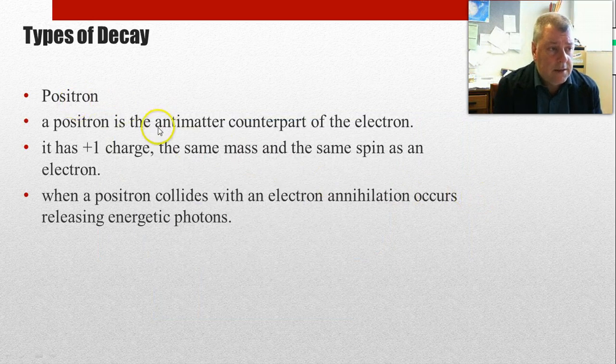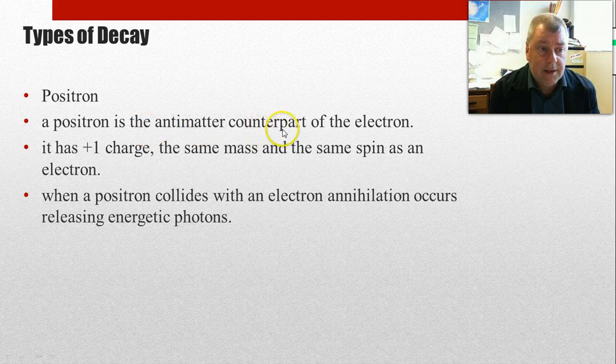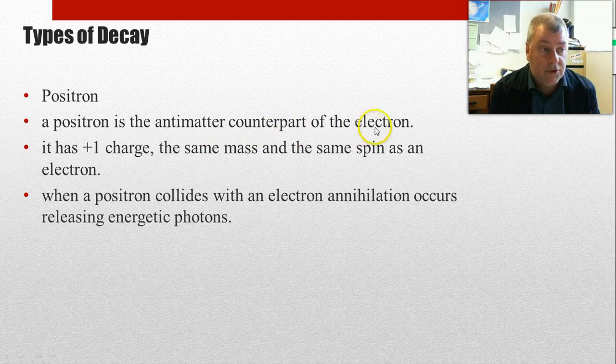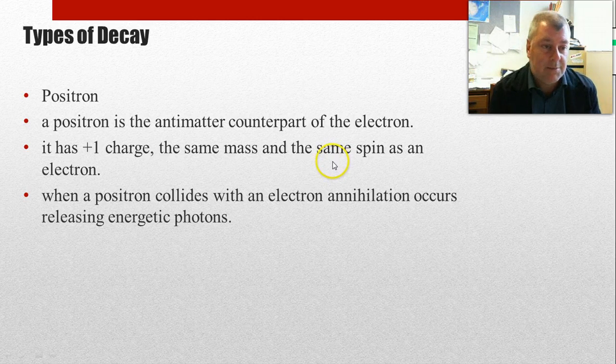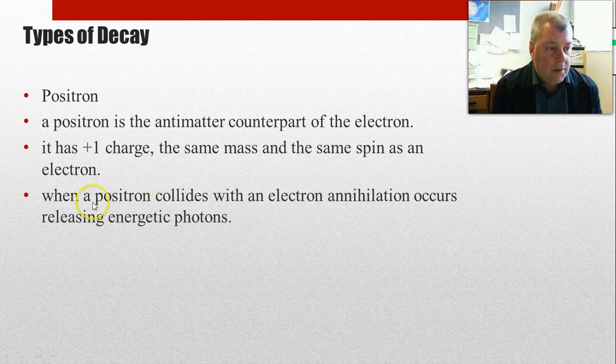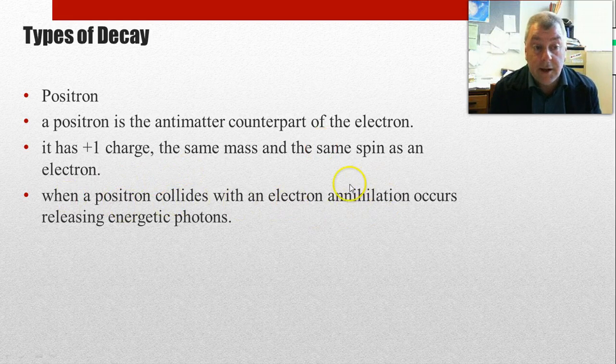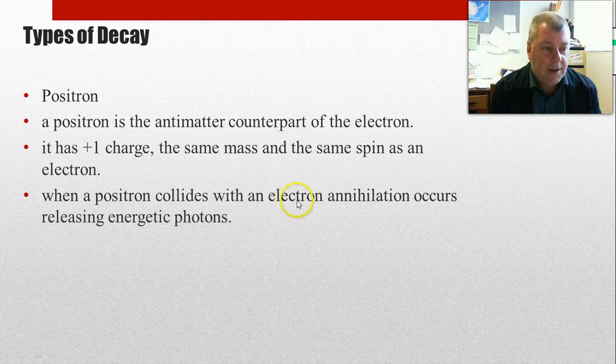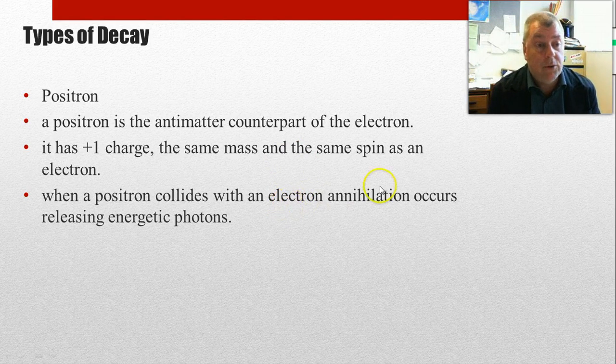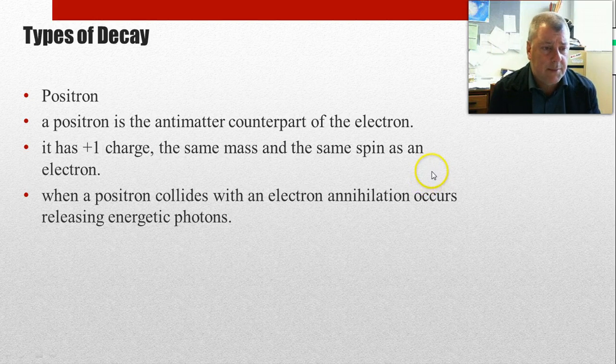Now, positron decay. What's a positron? It's the antimatter counterpart or equivalent of the electron. It has a plus one charge. It has the same mass and the same spin as an electron, which is important. But in terms of defining electrons and matter and antimatter, spin is an important characteristic. And when a positron collides with an electron, annihilation occurs. That's a great word. Releasing energetic photons. So they annihilate each other, and the mass of them gets converted into energetic photons. So antimatter doesn't hang around for very long in our matter universe. But there is antimatter everywhere.